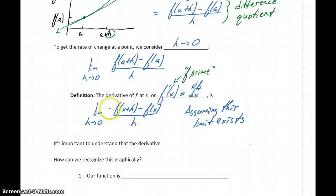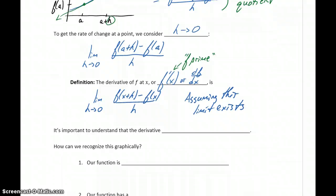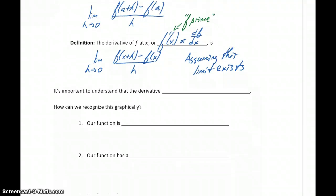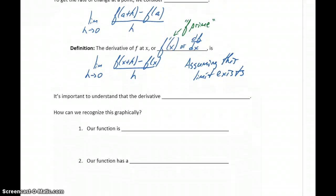If that limit doesn't exist — if it leads to a result of does not exist, infinity, negative infinity, or anything like that — then we'd say the derivative at x doesn't exist. So it's important to understand that there are cases where the derivative may not exist.